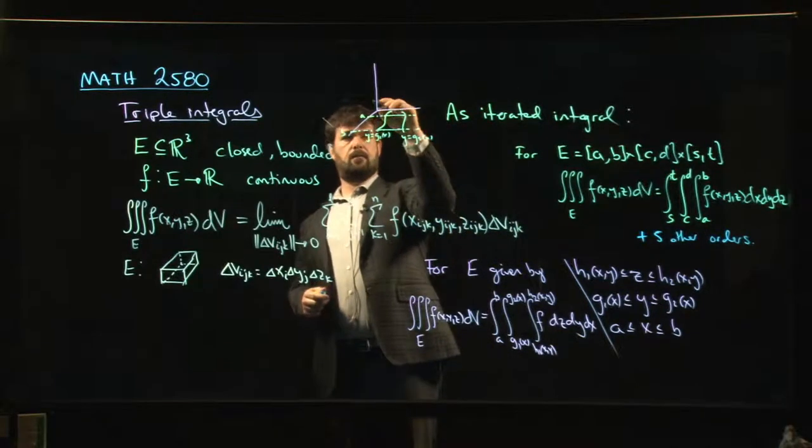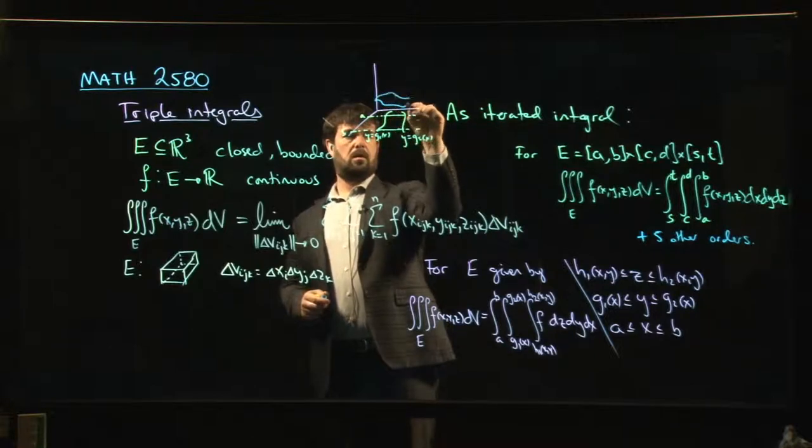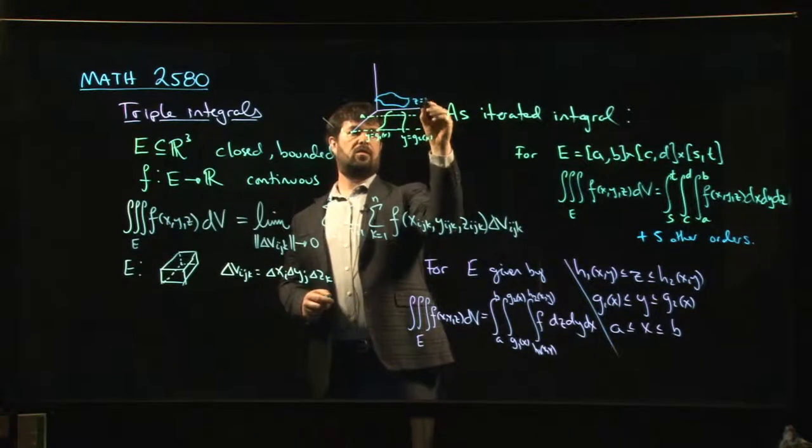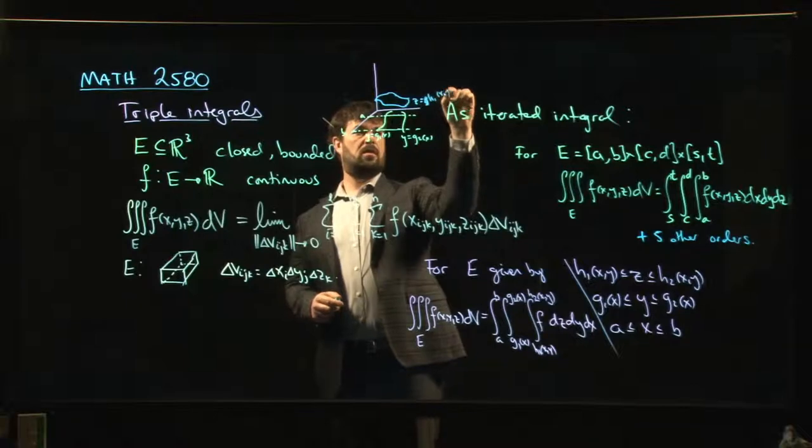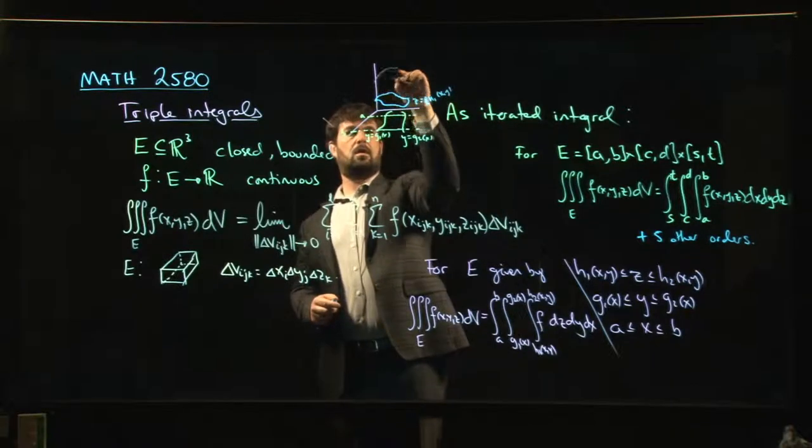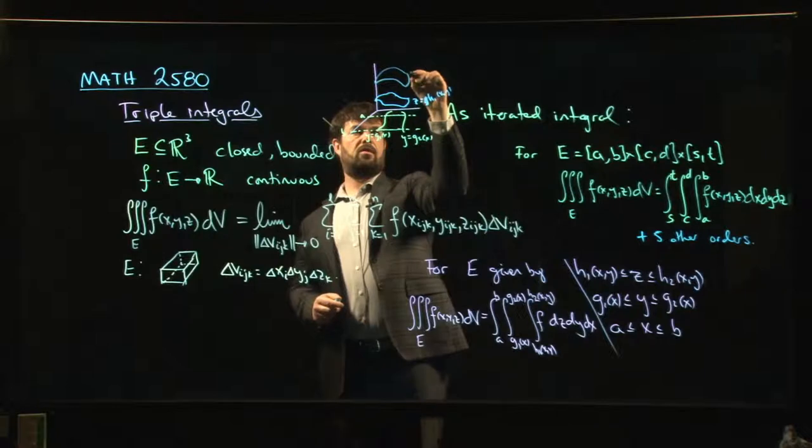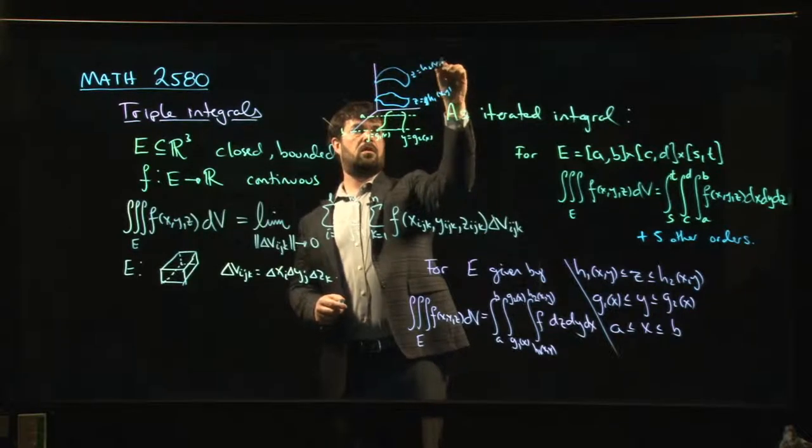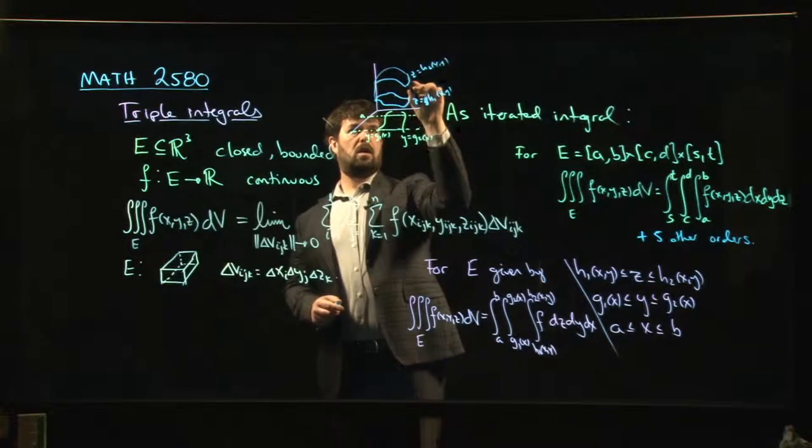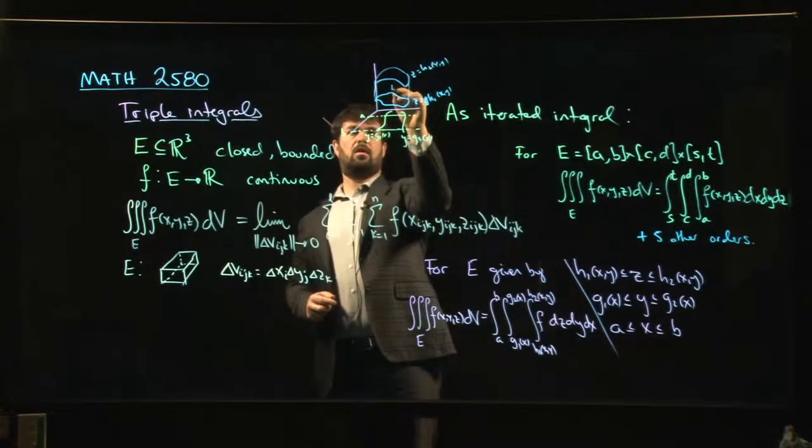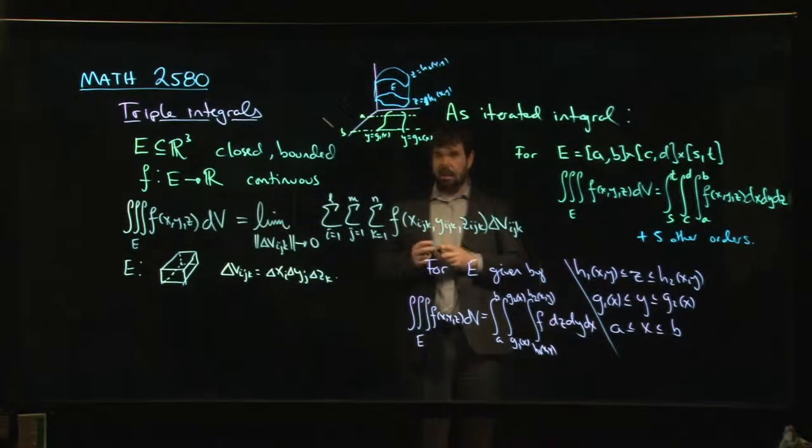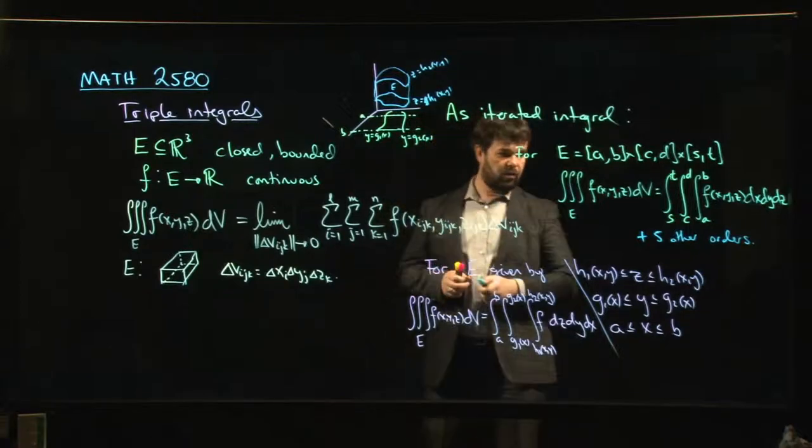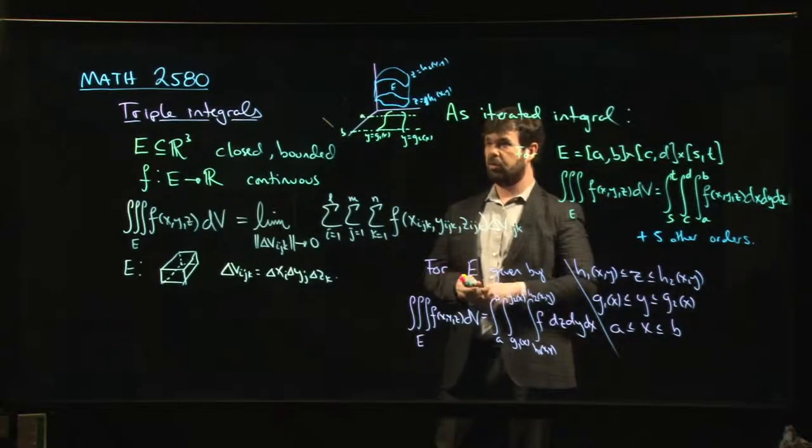And then you have your two surfaces sitting over that region. So you might, in fact, have something like, here's Z is equal to H₁ of X, Y. Here's Z is equal to H₂ of X, Y. And you've got this region in between. So E is this region that's bounded by those two surfaces. So that's the type of region that typically you'd be looking for when you're trying to set up an iterated triple integral. And we'll see that in some of the examples to come.